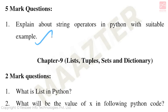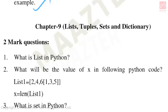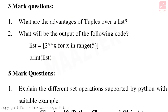Chapter 9: List, Tuples, Sets, and Dictionary. Important 2-mark questions: What is a list in Python? What will be the value of x in the following Python code? What is a set in Python? Important 3-mark questions: What are the advantages of tuples over a list? A code is given and you need to find the output. Important 5-mark questions: Explain the different set operations supported by Python with a suitable example.